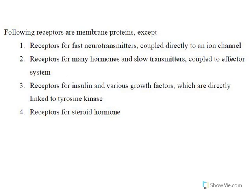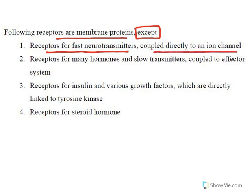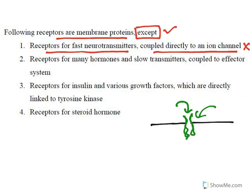The first question: 'Following receptors are membrane proteins — except.' The question means that three of the four options are membrane receptors, and we need to find the one that is not. The first option is receptors for fast neurotransmitters coupled directly to an ion channel — these are membrane ion channels present at the surface of the membrane, so they are membrane proteins. First option is not the answer.